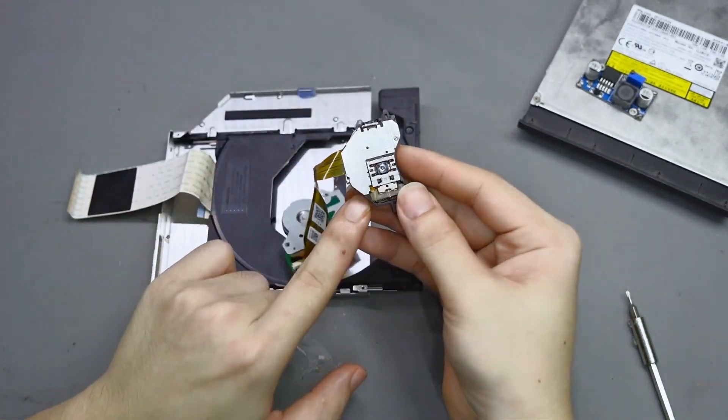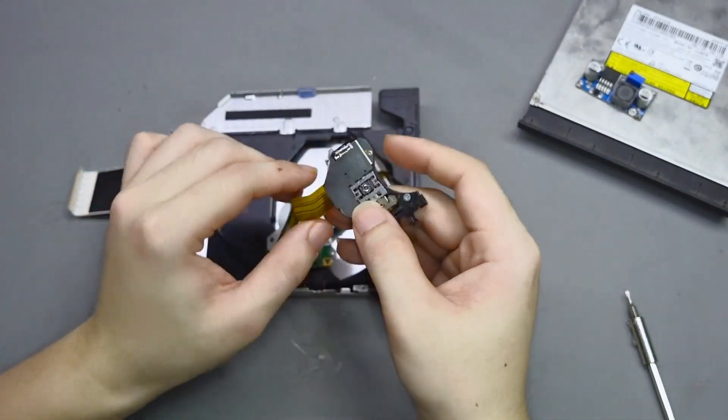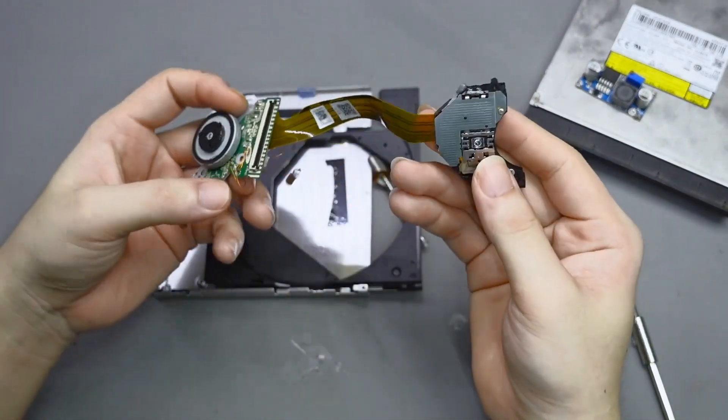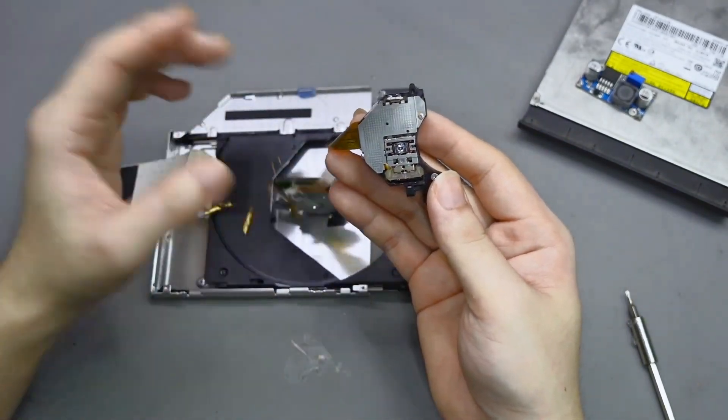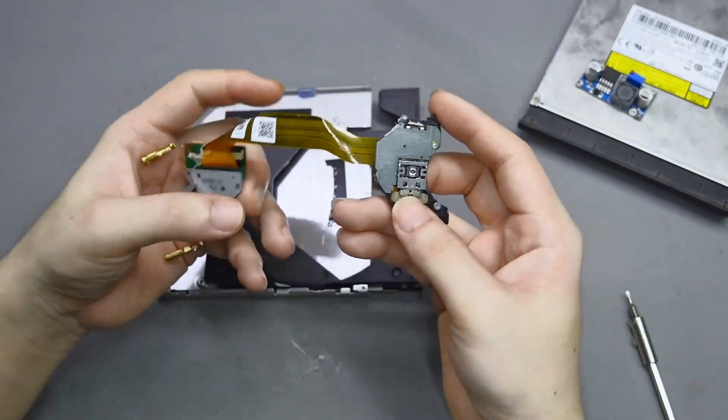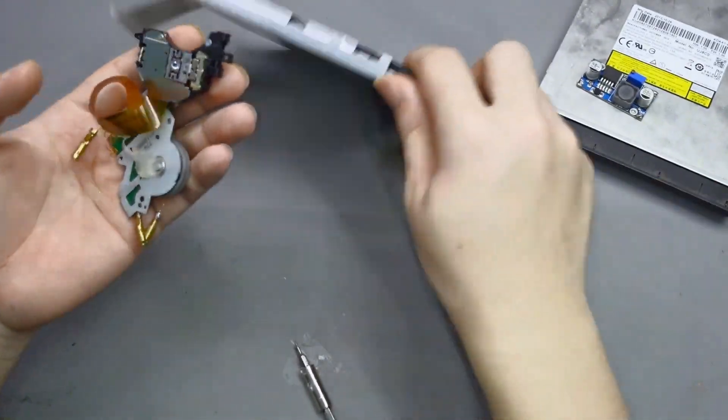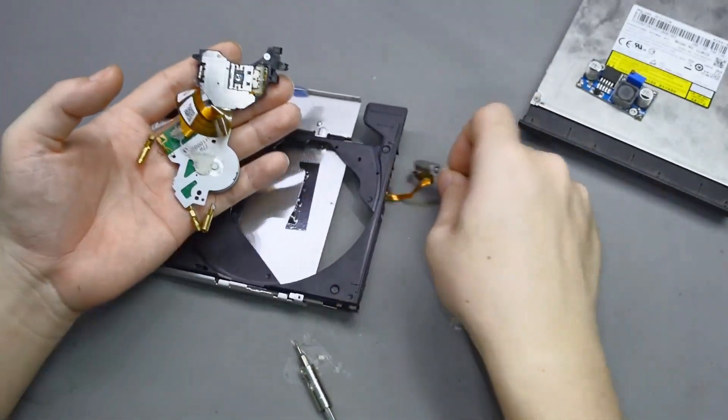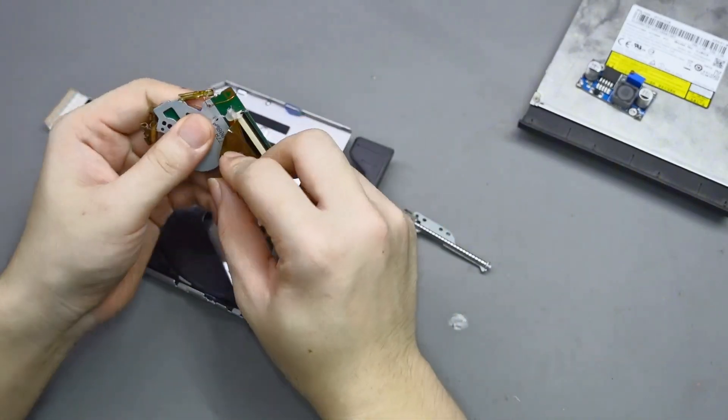This part here is the optical pickup head which contains the laser used to read data from the disk. Inside, there's a high power laser diode. Today, we'll be reusing this laser. Please note that only DVD writer models contain lasers powerful enough for burning applications. Standard CD drives typically don't have lasers strong enough to burn materials. Alright, let's take it apart and see what's inside.